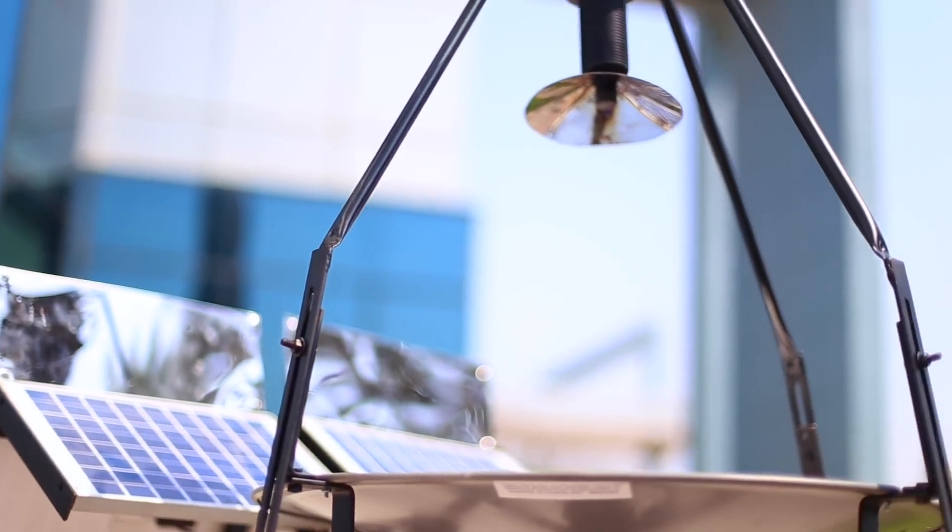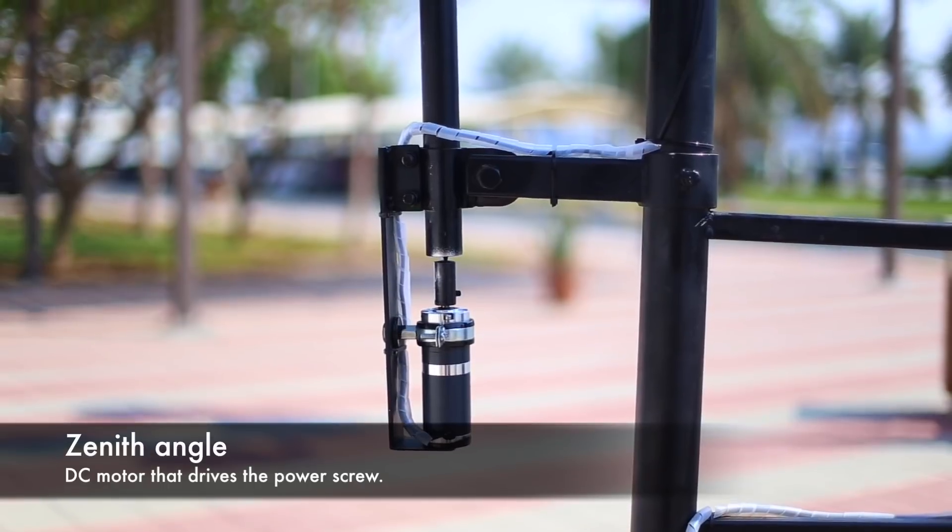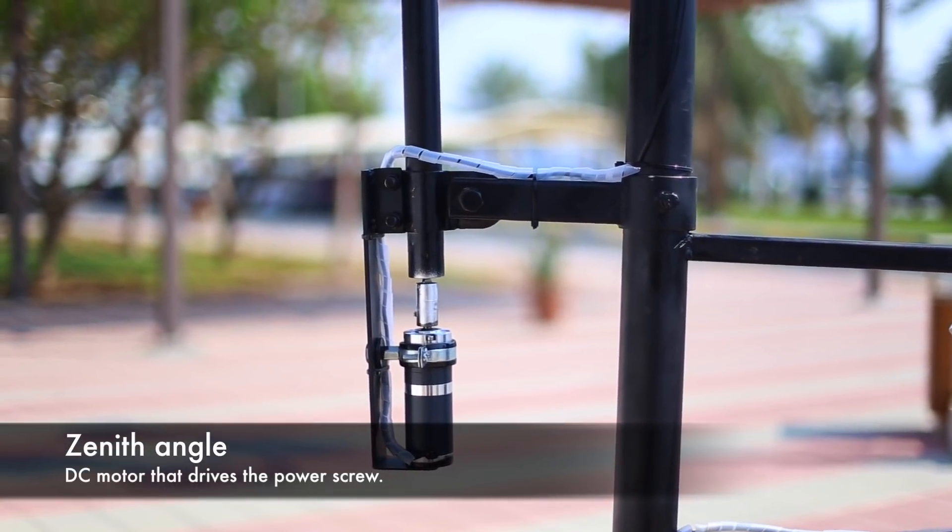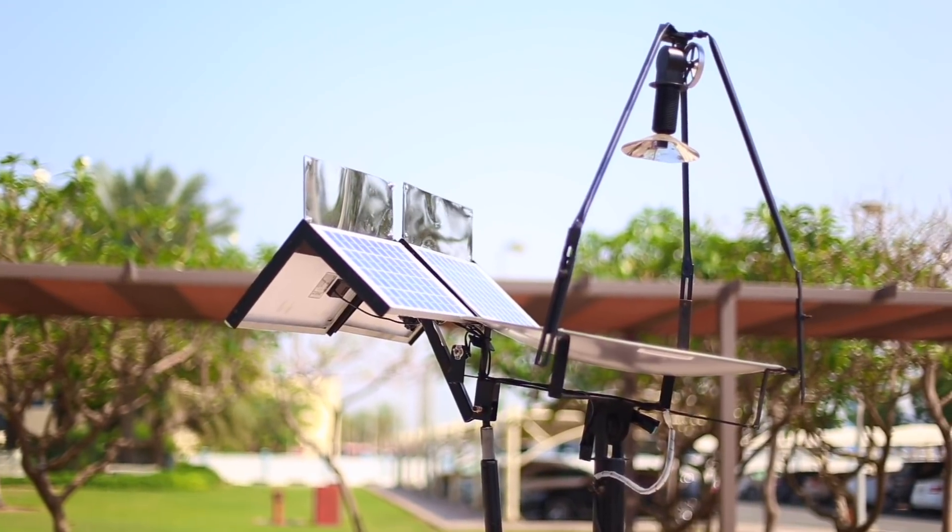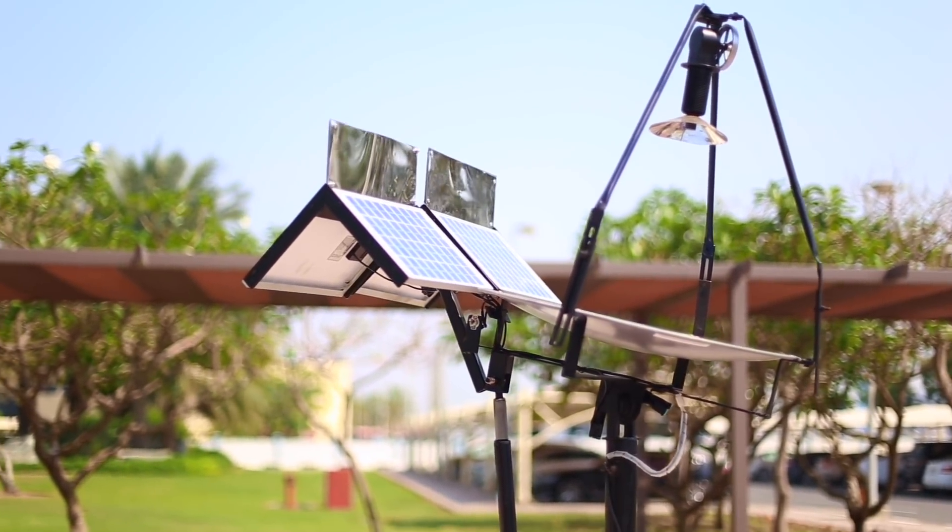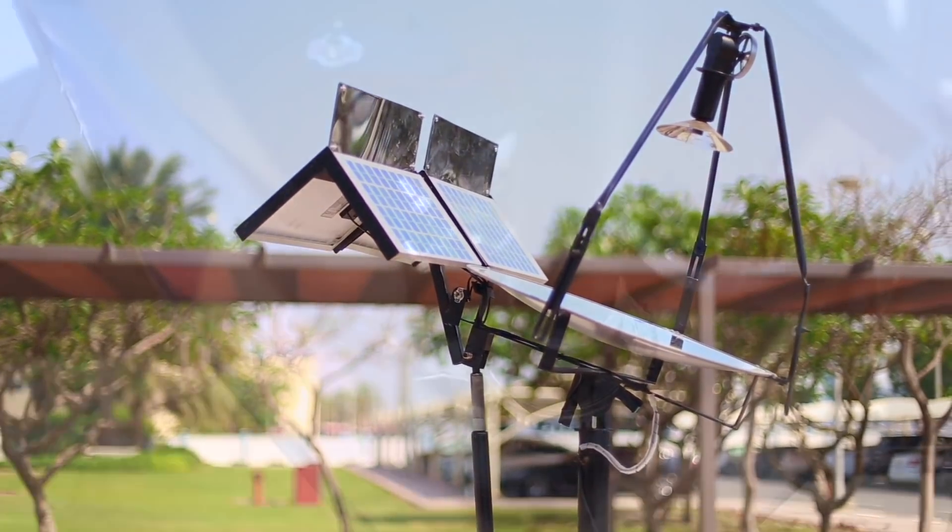The system is fully autonomous, which requires no battery or any external power source to power the tracking system. Instead, small PV panels were used for two purposes. First, to power the tracking system motors. Second, to sense the sunlight.